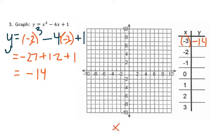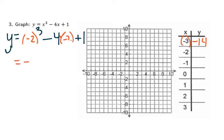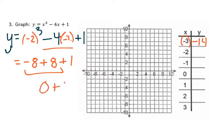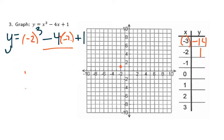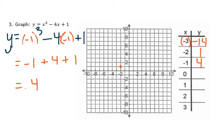Now for negative 2: negative 2 cubed is negative 8. Then negative 4 times negative 2 makes positive 8. These two together make 0, so 0 plus 1 gives us 1. So negative 2, 1 is one point we can put on the graph. Next, plugging in negative 1: negative 1 cubed is negative 1. We add 4 to that and add 1, ending up with 4. So negative 1, 4 is our next data point.